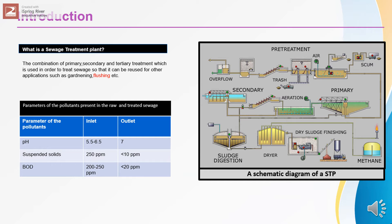Sewage mainly constitutes of suspended solids and BOD. The pH is slightly acidic, in the range of 5.5 to 6.5. The suspended solids are at a concentration of 250 ppm at the inlet, and the expected concentration at the outlet should be less than 10 ppm. BOD — biological oxygen demand — is the amount of oxygen required by micro-organisms to destroy biodegradable organics. This is around 200 to 250 ppm at the inlet, and at the outlet it should be less than 20 ppm.